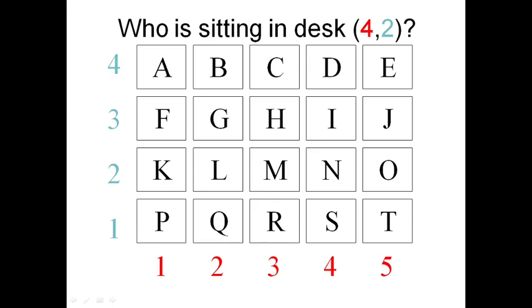So my question is, who is sitting in the desk (4,2)? 4 stands for number of column, 2 stands for number of row. You need to identify the person who is sitting in 4th column and 2nd row. So if you go in 4th column, this is our 4th column, and this is our 2nd row. So N is sitting. N is the person who is sitting in 4th column and 2nd row.